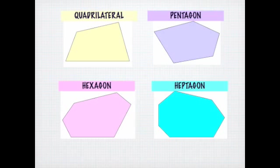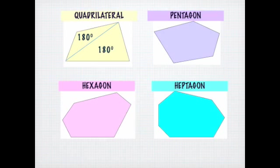Let's focus on the quadrilateral. If I start at one of the vertices and start drawing diagonals to make triangles without them overlapping — for the quadrilateral, I can only draw one diagonal to make two triangles, and I can't draw any more because I don't want my diagonals to cross. So two triangles times 180 degrees gives me 360. That means the interior angles of the quadrilateral need to add up to 360.